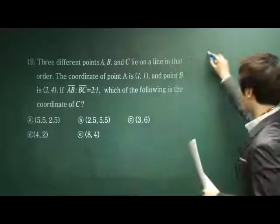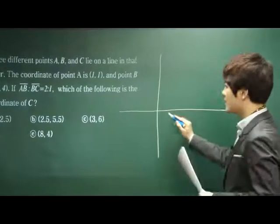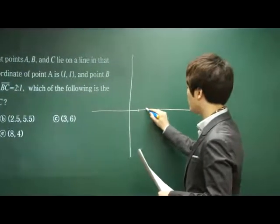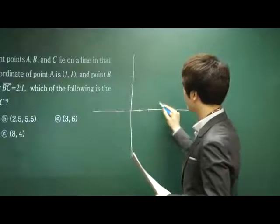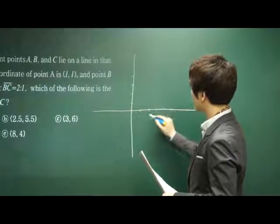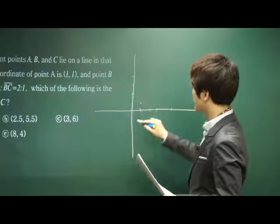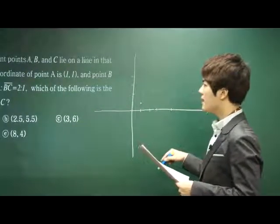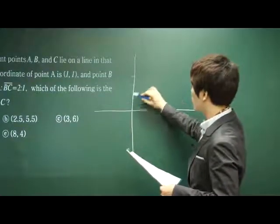Okay, for this kind of problem, let's draw a coordinate. It says point A is (1,1). 1,1 lies here. And the point B lies in (2,4). 2,4. 1,2,3,4.